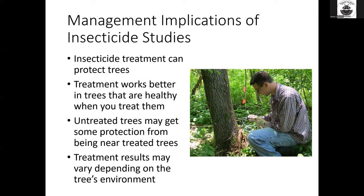Management implications: insecticide treatment can protect trees. The treatment works better in trees that are healthy initially when you treat them — once a tree is too far gone and emerald ash borer has disrupted water and nutrient flow, it also disrupts the flow of those insecticides and you don't get good protection. We do see that untreated trees may get some protection from being near treated trees. Treatment results might also vary depending on the tree's environment, as we have differences in upper versus lower slope conditions at the ANF, and we'll look closely into that this winter.